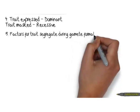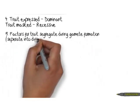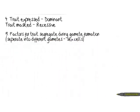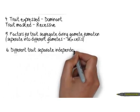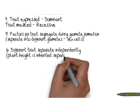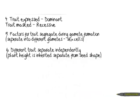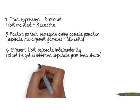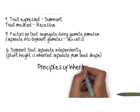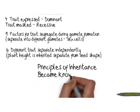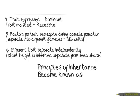Next is the idea of segregation. He found that factors for a trait segregate during gamete formation — gametes are the sex cells, so the sperm, egg, or pollen. Different traits separate independently: height will separate independently of seed shape or seed colour, and they're not influenced by each other. He called these the principles of inheritance, and they became known as Mendel's Laws.